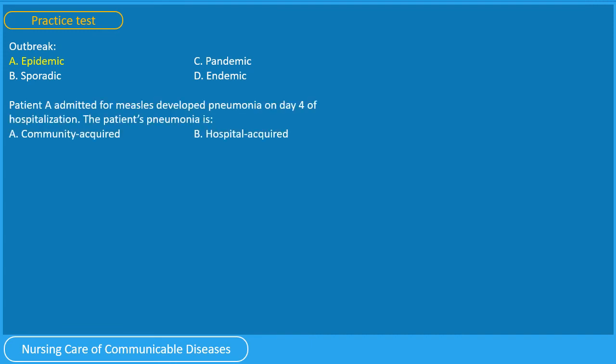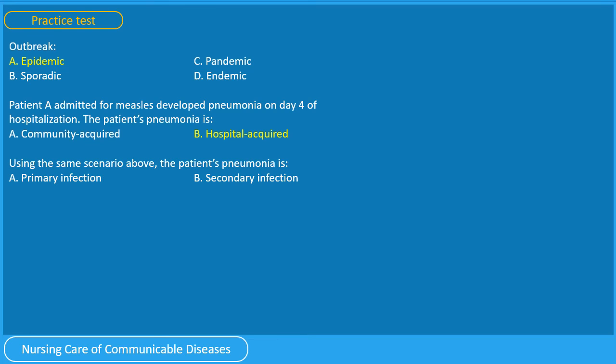Patient A admitted for measles developed pneumonia on day four of hospitalization. The patient's pneumonia is: A. Community acquired, B. Hospital acquired. An infection developing after the 48th hour of hospital stay is already classified as hospital acquired. The correct answer is B. Hospital acquired. Using the same scenario, the patient's pneumonia is: A. Primary, B. Secondary infection. This was explicitly mentioned in the lecture, and the answer is B. Secondary infection.